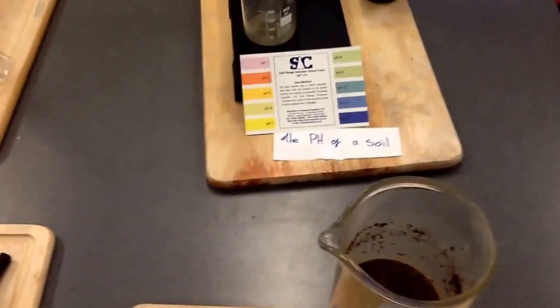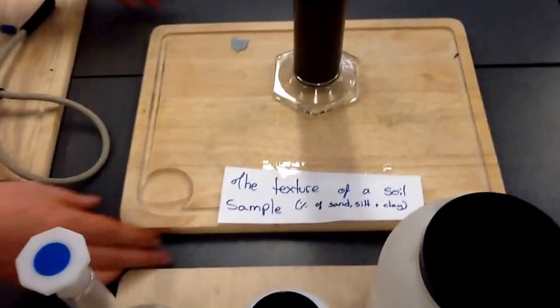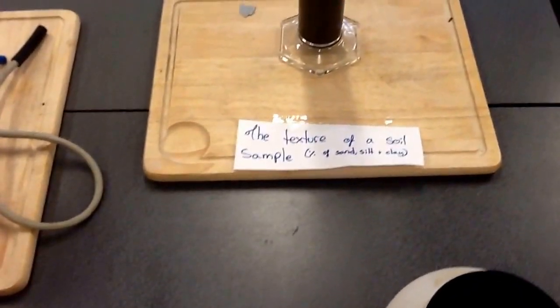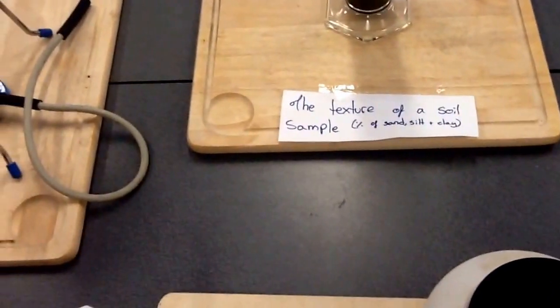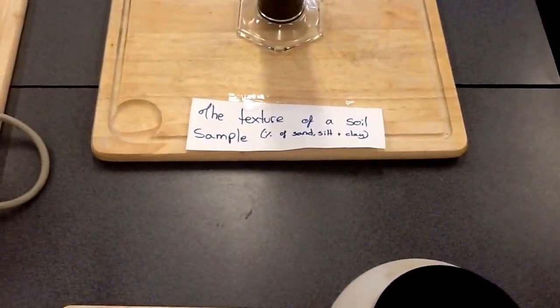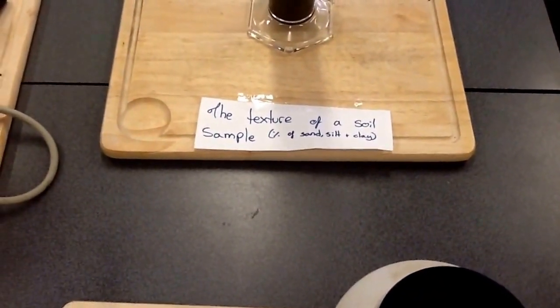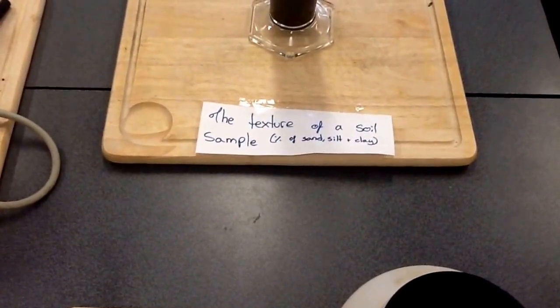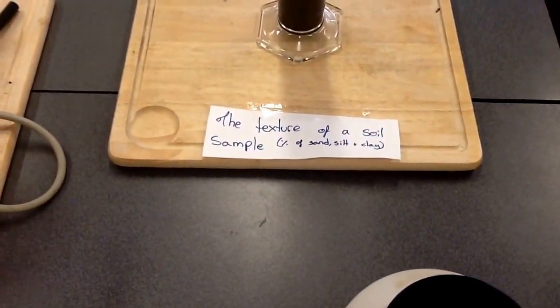The next one is the texture of a sample of soil. This is to measure the amount of sand, silt and clay that's in a sample of soil. So we get the large graduated cylinder, fill it up to 100 with soil and water, shake it and then we read off the percentage of sand, silt and clay.